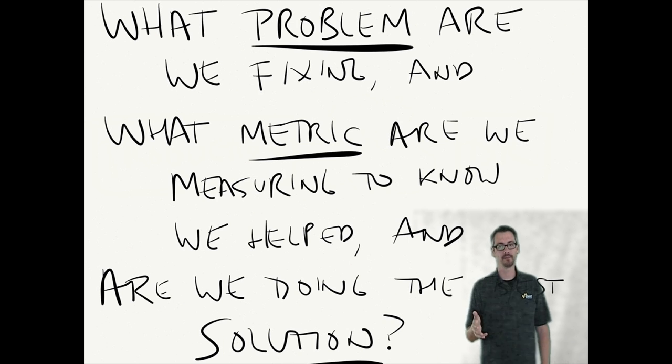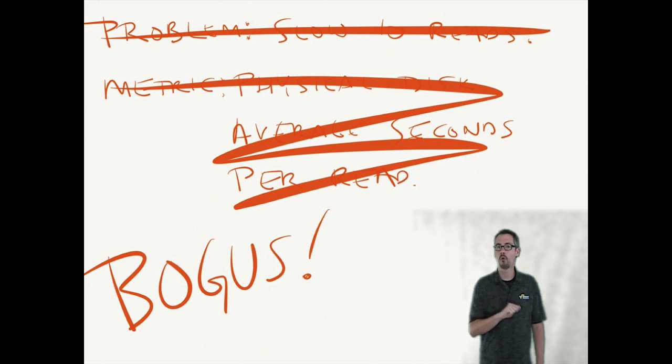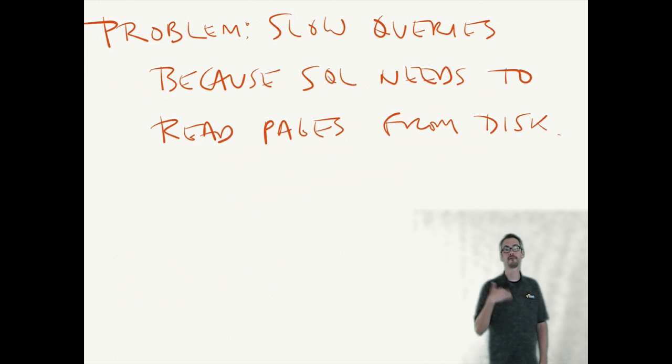Before you go creating more problems, let's take a step back and ask, what's the problem we're trying to fix? And when we think we fixed it, what's the metric that we're monitoring to know that we actually had the effect that we want? Often we think the problem is fragmentation, so I'm just going to improve that. Let's step back a second. Often we think the problem is slow IO reads. I'm going to make that faster and measure this physical disk average seconds per read counter. No one is complaining about that. I know you think the end users are complaining because the queries are slow and it's due to slow storage, but take a further step back. The real problem is slow queries and the SQL server is reading from disk, period.